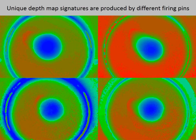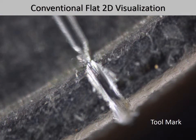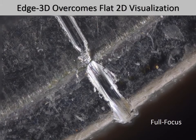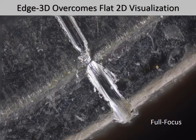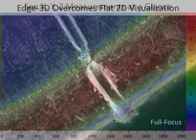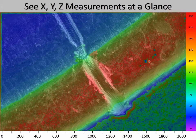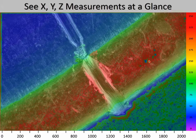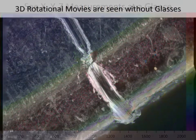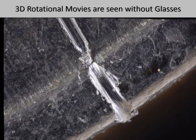Here is a two-dimensional image of a tool marking in a piece of metal. As we can see, only a small portion of the image is in focus. With the Edge 3D Microscope, the entire tool marking is seen in full focus. This tool marking can be precisely quantified by analyzing the calibrated 3D color depth image, and the depth information is visualized by using a 3D rotational video loop.